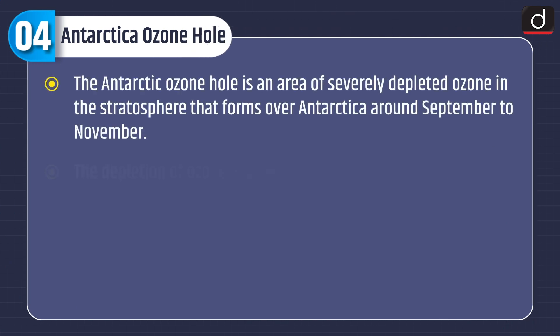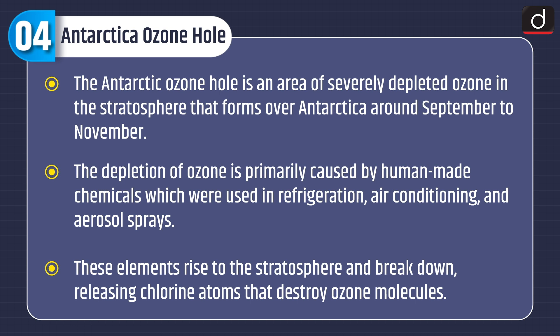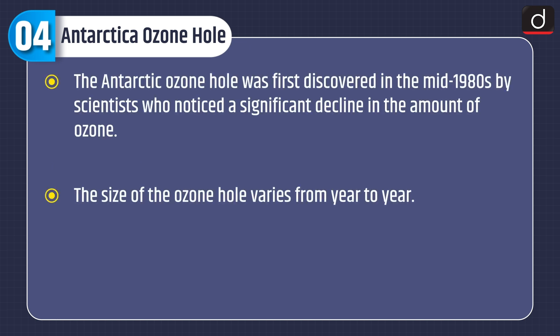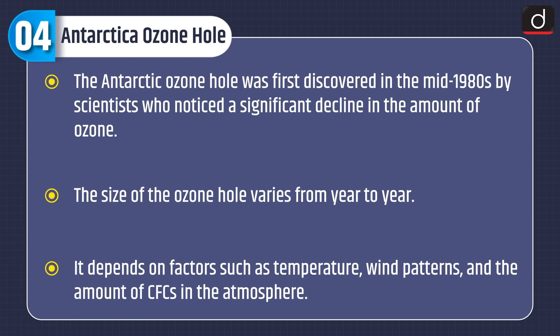The Antarctic ozone hole is an area of severely depleted ozone in the stratosphere that forms over Antarctica around September to November. The depletion of ozone is primarily caused by human-made chemicals used in refrigeration, air conditioning and aerosol sprays. These elements rise to the stratosphere and break down, releasing chlorine atoms that destroy ozone molecules. The Antarctic ozone hole was first discovered in the mid-1980s by scientists who noticed a significant decline in the amount of ozone. The size of the ozone hole varies from year to year, depending on factors such as temperature, wind patterns and the amount of CFCs in the atmosphere.